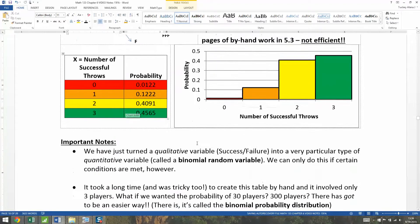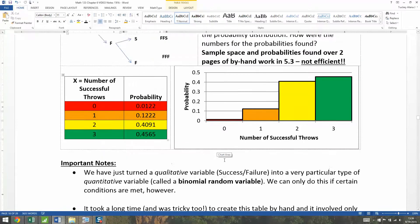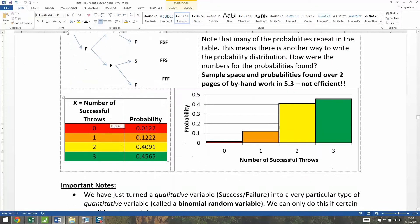Namely, it's called a binomial random variable. Now you can only do this sometimes. You can't do this for all problems, but you can do it if particular conditions are met. We'll talk about what those conditions are in another page. But suffice it to say that what we're doing is taking something that was pretty inefficient and by converting it into this quantitative random variable as long as conditions are met, it'll make it very quick and efficient and easy to find with a calculator.